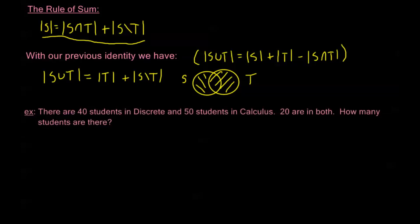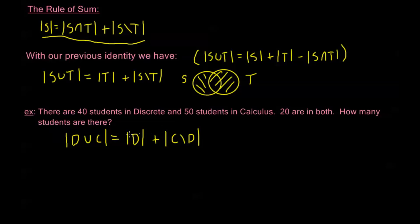For example: there are 40 students in discrete math and 50 students in calculus, with 20 students in both. How many total students are there? Let D be students in discrete and C be students in calculus. The order of D∪C gives the total. Using the formula: |D| + |C − D| = 40 + 30 = 70, since 50 − 20 = 30 students are in calculus but not discrete. There are 70 total students.